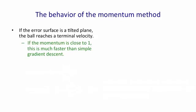If that momentum term is close to 1, then it'll be going down much faster than a simple gradient descent method would.